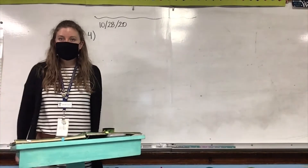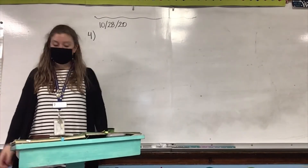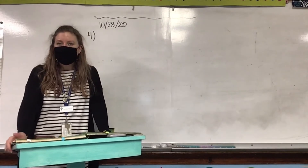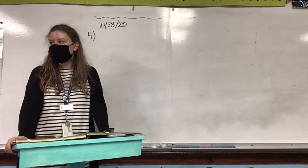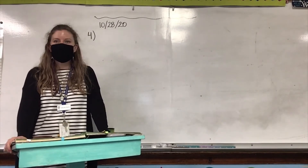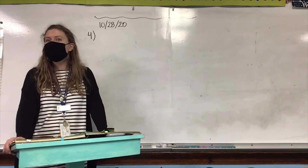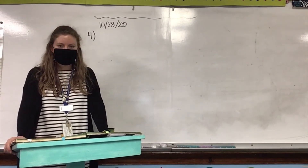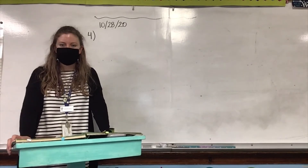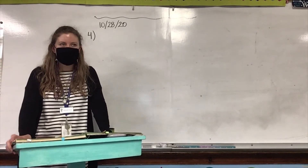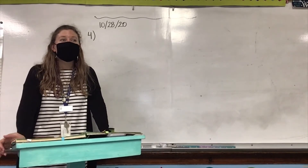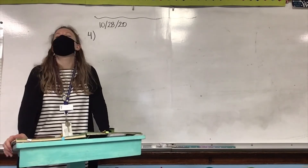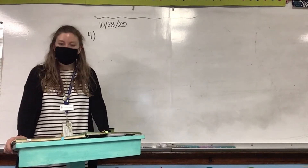Yesterday we talked about what vertebrates are. What are vertebrates? Animals with backbones. What is that other type of animal called? The opposite. An invertebrate, which means they have no backbone. They do not have a backbone.